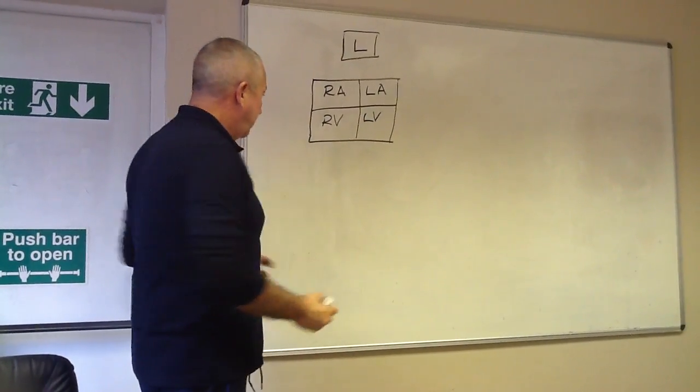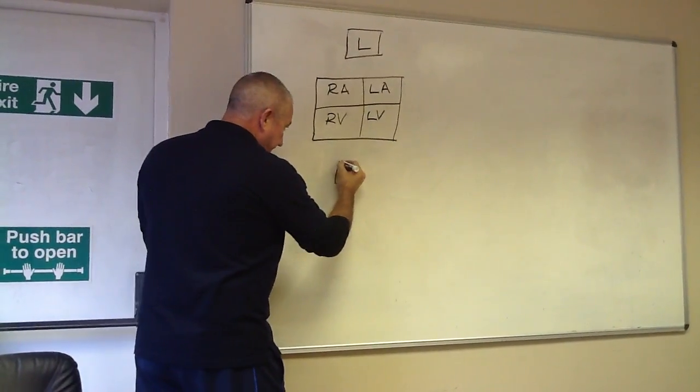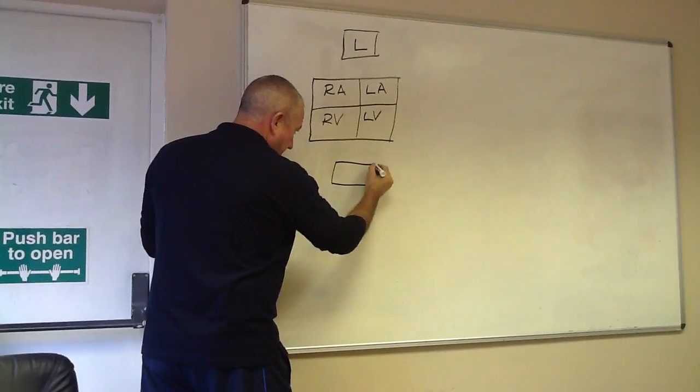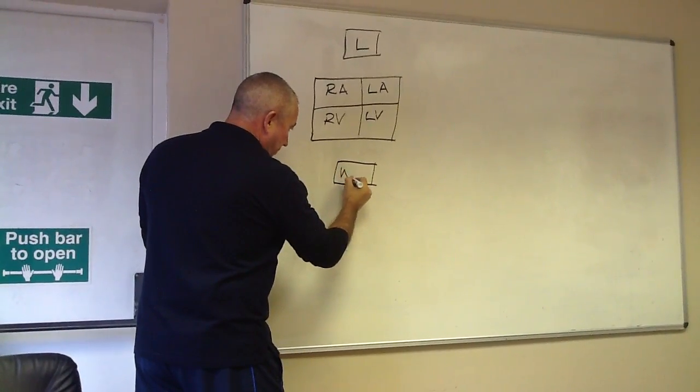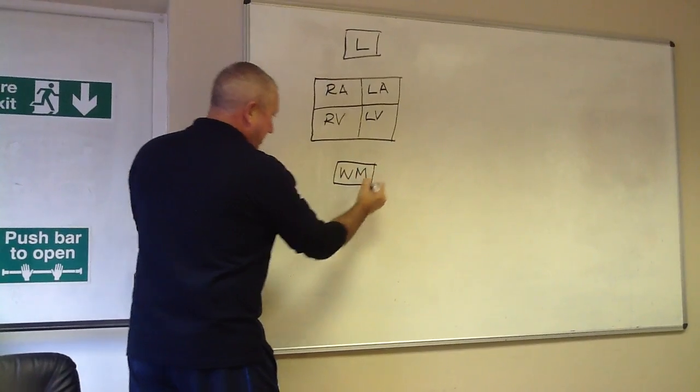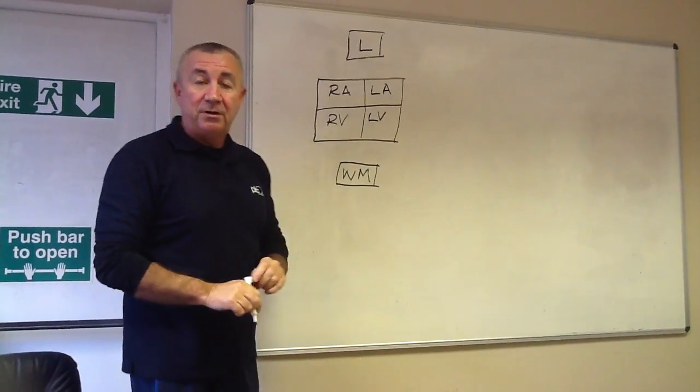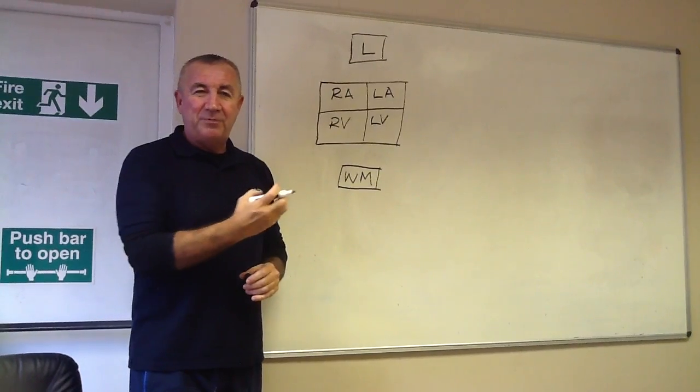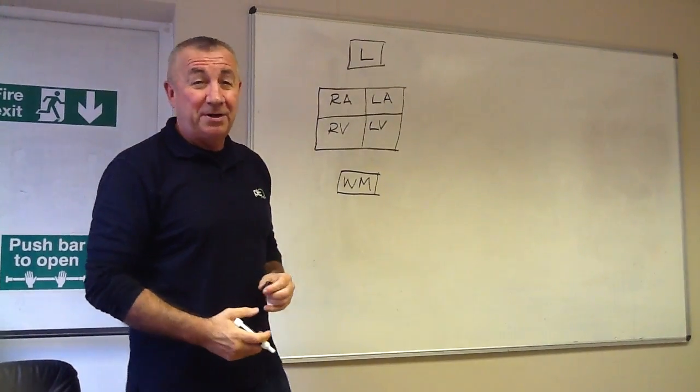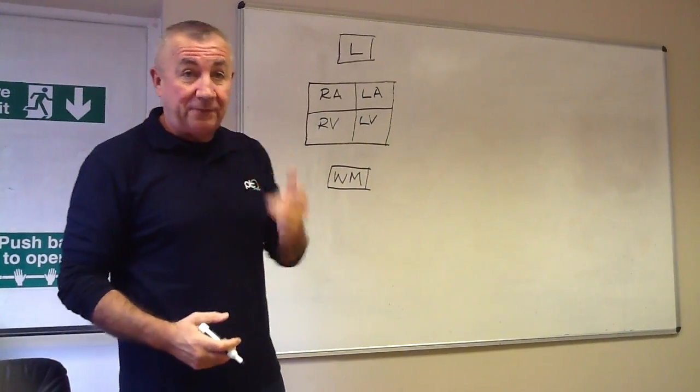So we have our heart. At the bottom, another box, and we are going to put into this one WM. The WM stands for working muscles. So this represents all of the working muscles in the body. It is a very simplified sketch obviously.